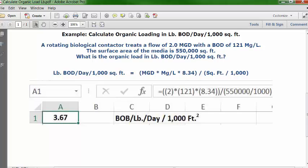Go to the formula bar and type in this formula: equals, open parentheses 2, multiplication key, open parentheses 121, multiplication key, open parentheses 8.34, two closed parentheses, division key, open parentheses 550,000, division key 1,000, close parentheses.